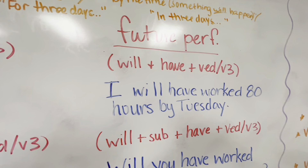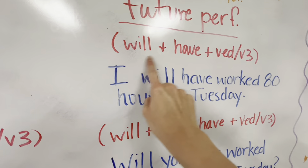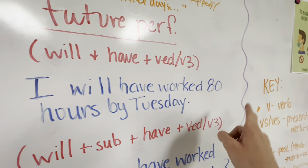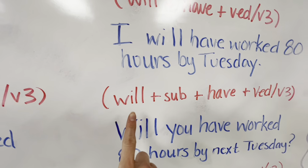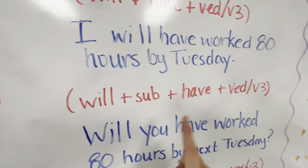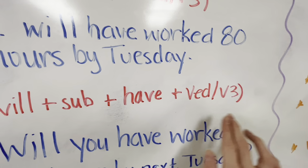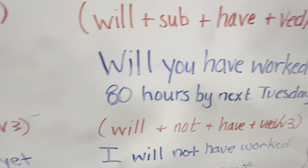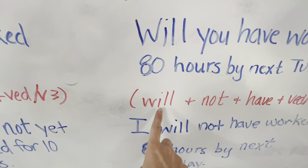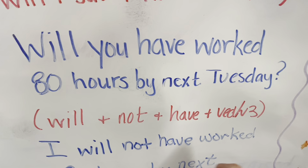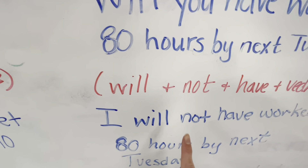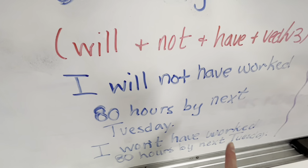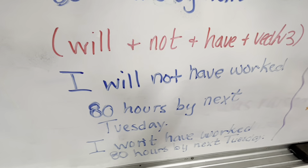Future perfect: will, have, and our verb form — I will have worked 80 hours by Tuesday. To make it a question: will, subject, have, and our verb form — will you have worked 80 hours by next Tuesday? To put it in the negative: will not, have, and our verb form — I will not have worked 80 hours by next Tuesday. Alternately, I won't have worked 80 hours by next Tuesday.